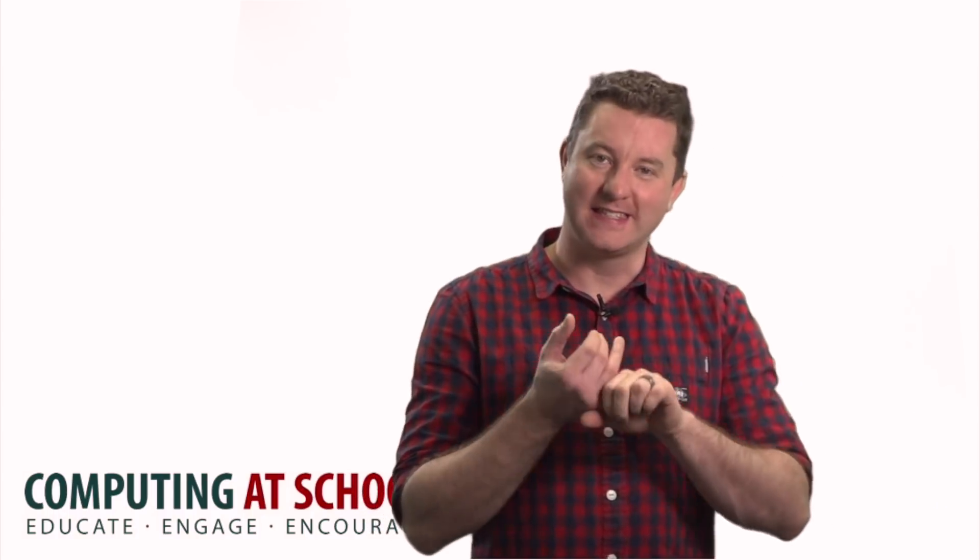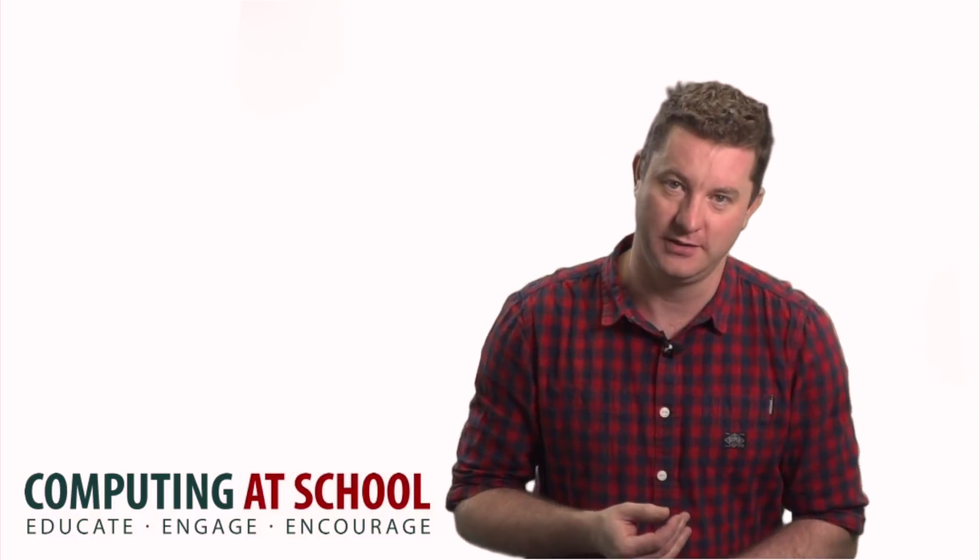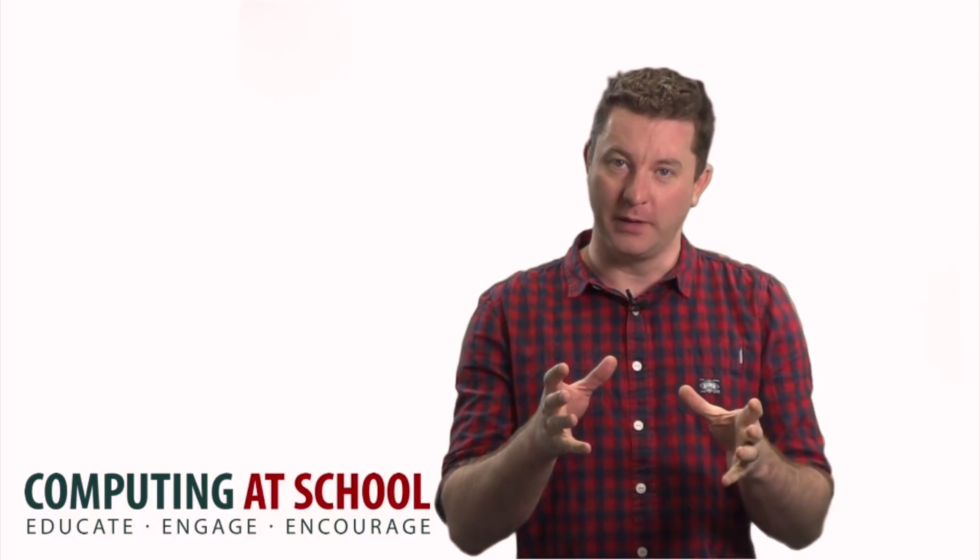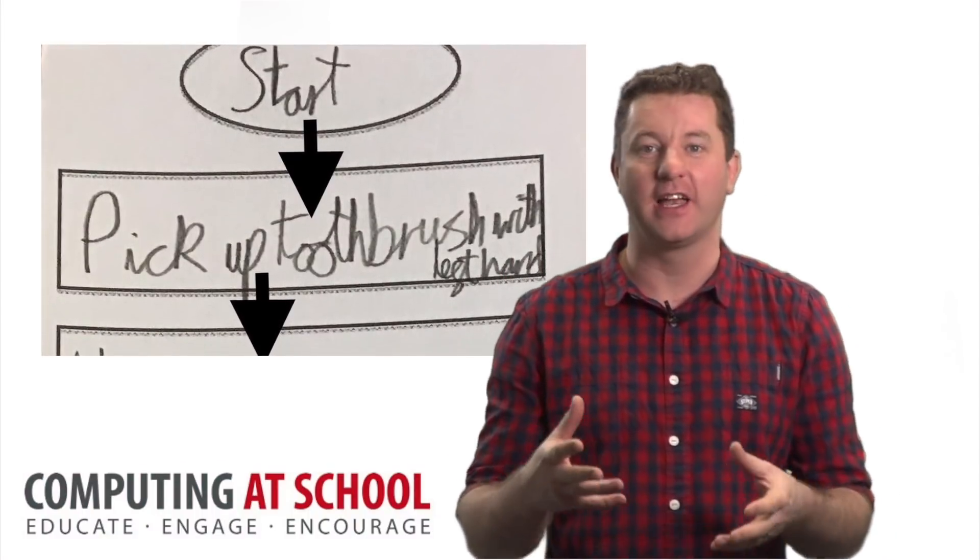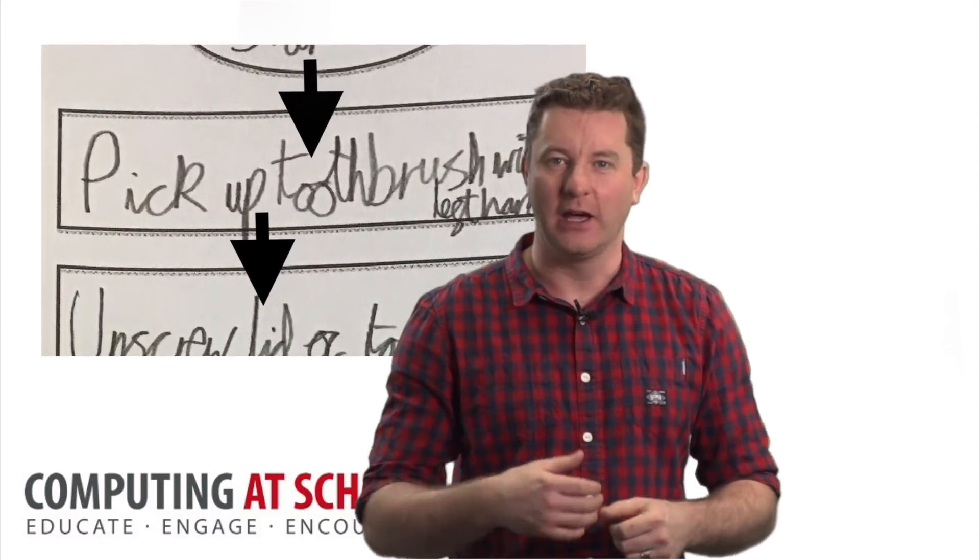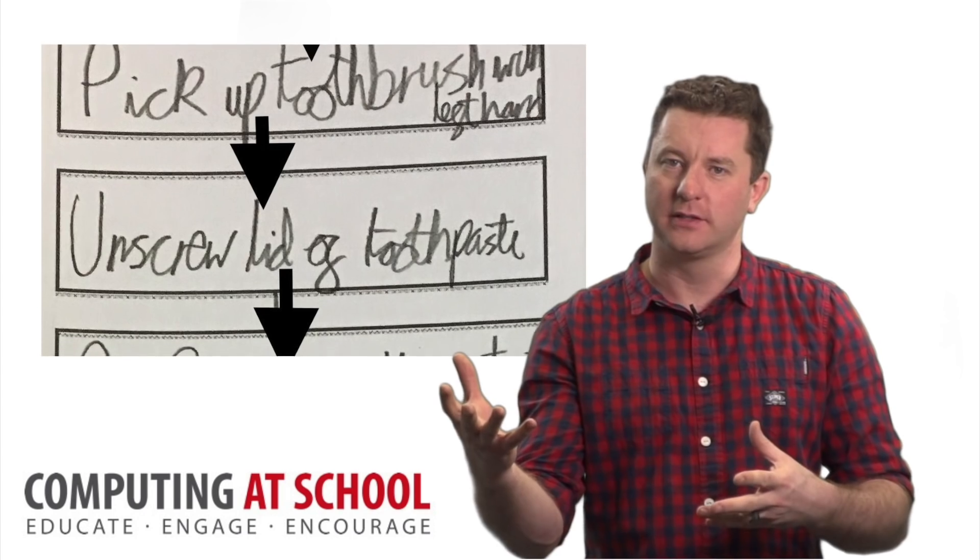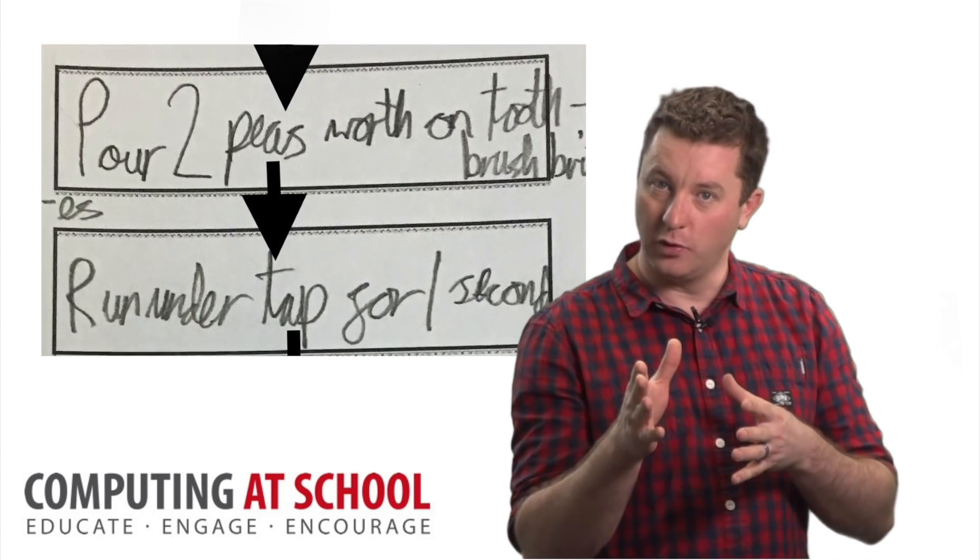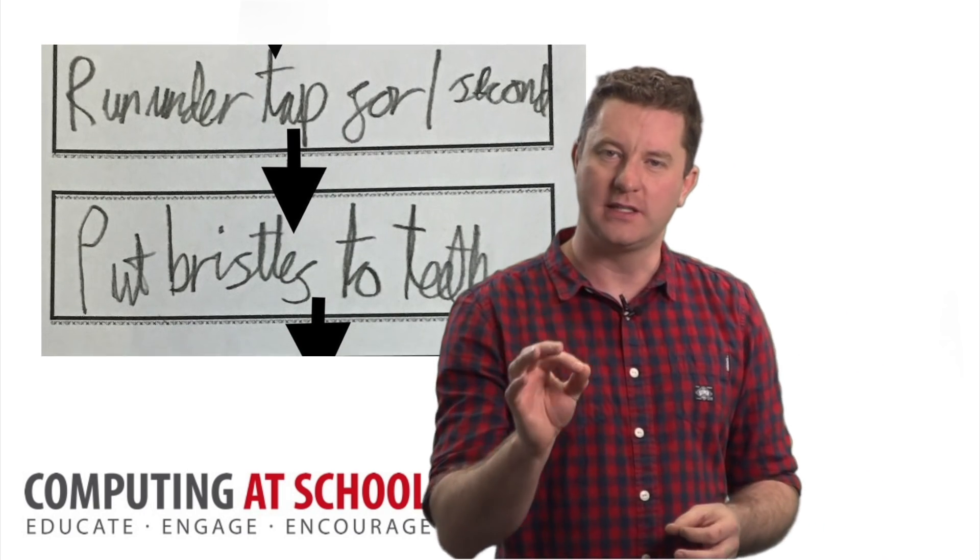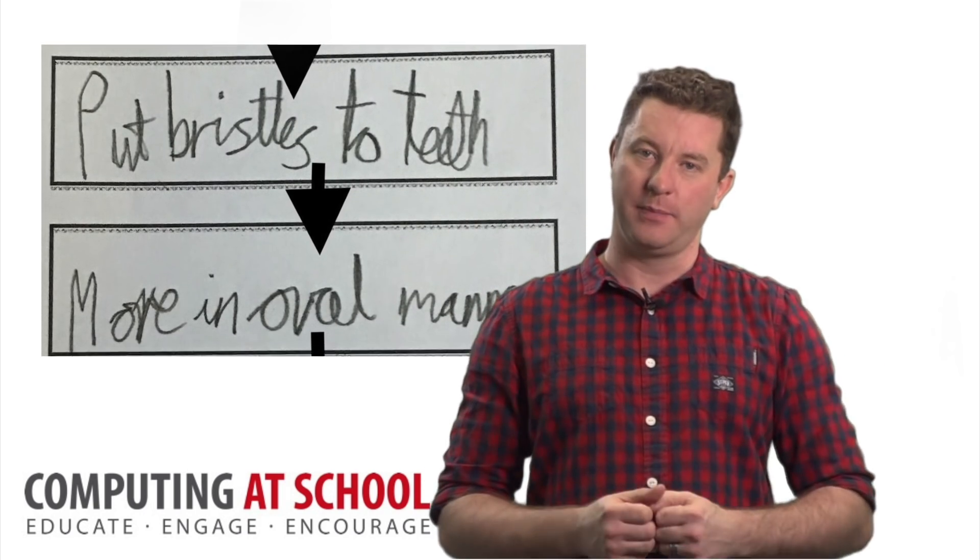So what actually is an algorithm? Pupils will need to know that an algorithm is step-by-step instructions to solve a problem or achieve a goal and they have to be as precise and as clear as possible. Now obviously the older the child or the higher the ability, you would expect them to be a little more precise.